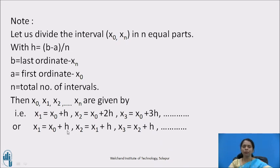See the next ordinate is obtained with the help of previous one. x2 is obtained with the help of x1, x3 is obtained by x2 and so on. That's why these ordinates are called equispaced ordinates.